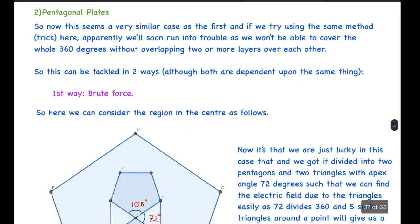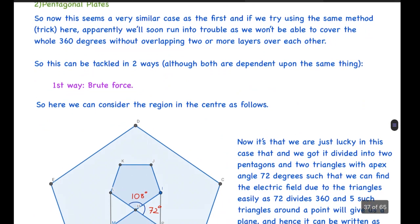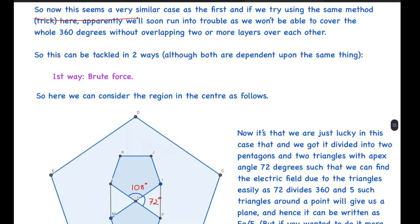Now if you consider pentagonal plates, this seems very similar to the first case. But if we try using the same method here, apparently we'll soon run into trouble as we want to be able to cover the whole 360 degrees without overlapping two or more layers over each other. Basically, what I'm saying is that the angle of the apex in a pentagon is 108 degrees, and 108 degrees isn't a divisor of 360. So we won't be able to cover it with an integral number of pentagonal plates; they will have to overlap somehow.